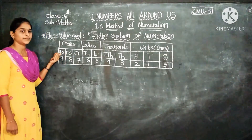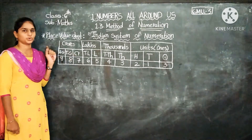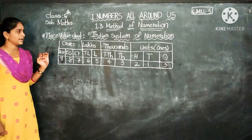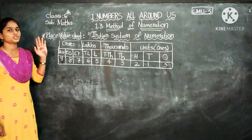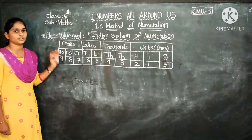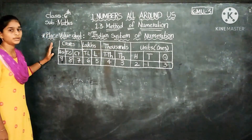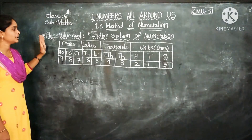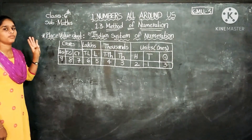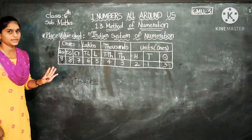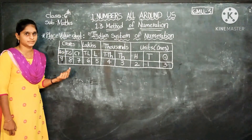So this is the Indian place value chart. The Indian place value chart has 4 periods and every period has some places.